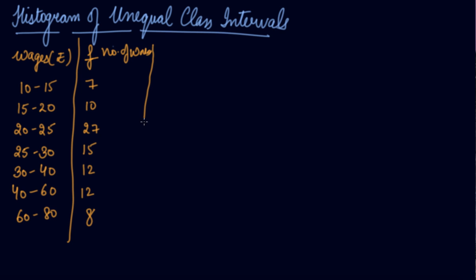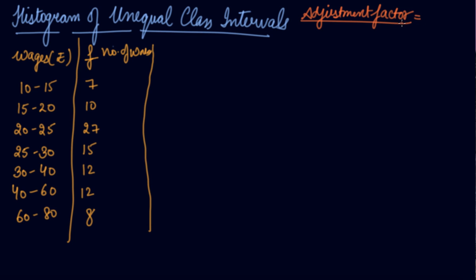When making this histogram, we have unequal class intervals: 10 to 15, 15 to 20, 20 to 25, 25 to 30 each have a width of 5, while 30 to 40 has a width of 10, 40 to 60 has a width of 20, and 60 to 80 also has a width of 20. So we have unequal class intervals. What we do is find out the adjustment factor. The adjustment factor is the width of the smallest class interval, which is 5. So the adjustment factor is 5.